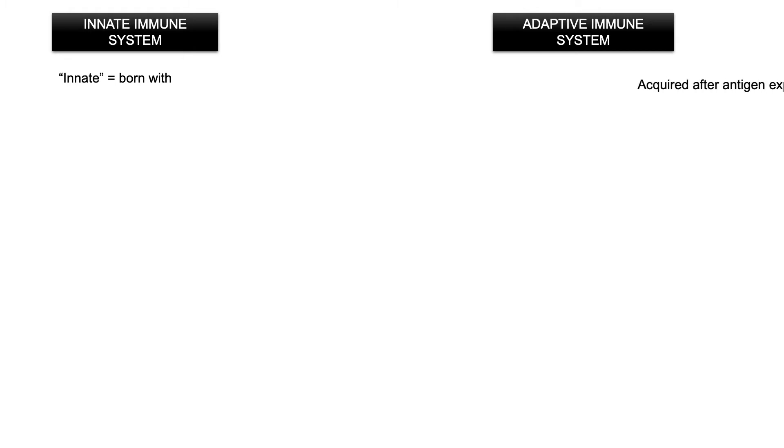Let's get into the finer details of comparing innate and adaptive immunity. The innate immune system is exactly that — innate. It is inborn, intrinsic, untaught, unlearned. You are born with innate immunity. Adaptive immunity, on the other hand, is acquired after antigen exposure. This immunity only develops after the host has been exposed to the antigens on the pathogen, in other words, the invading microorganism.